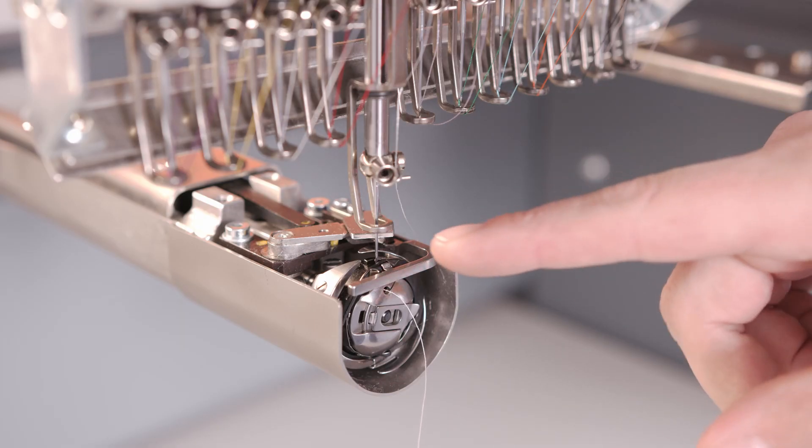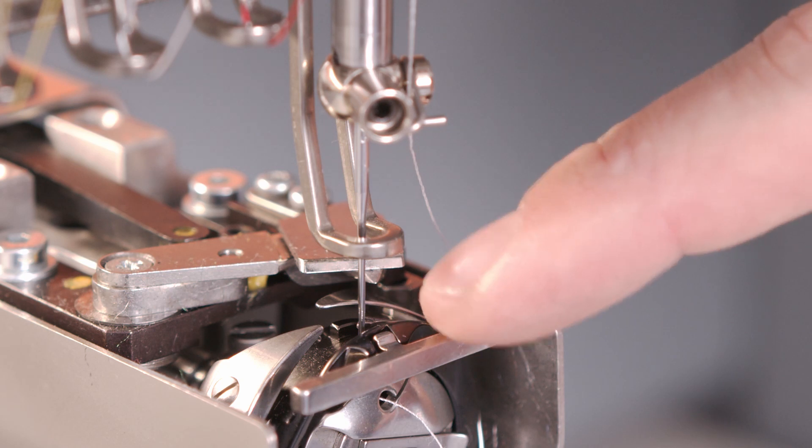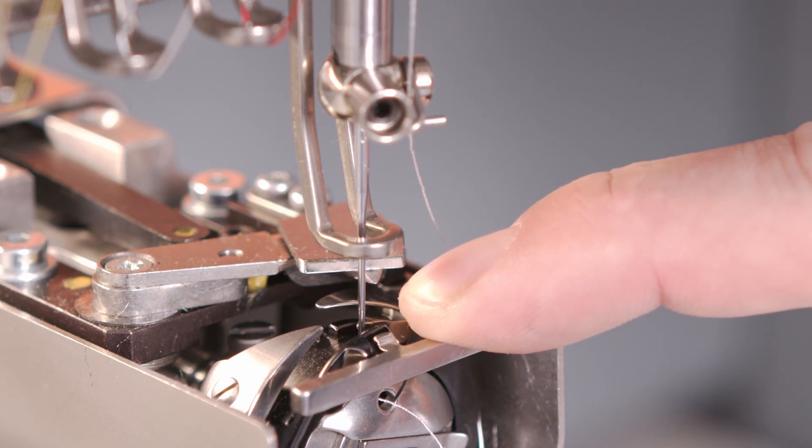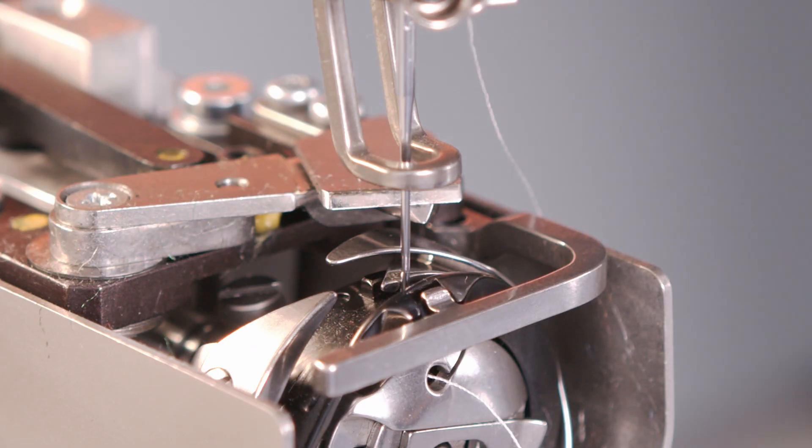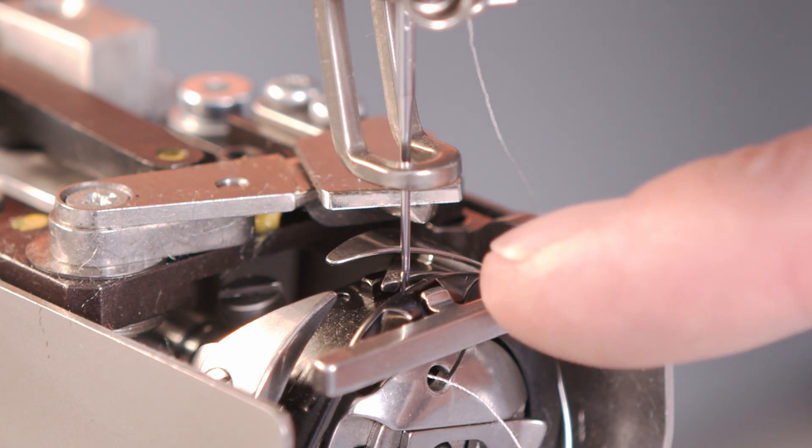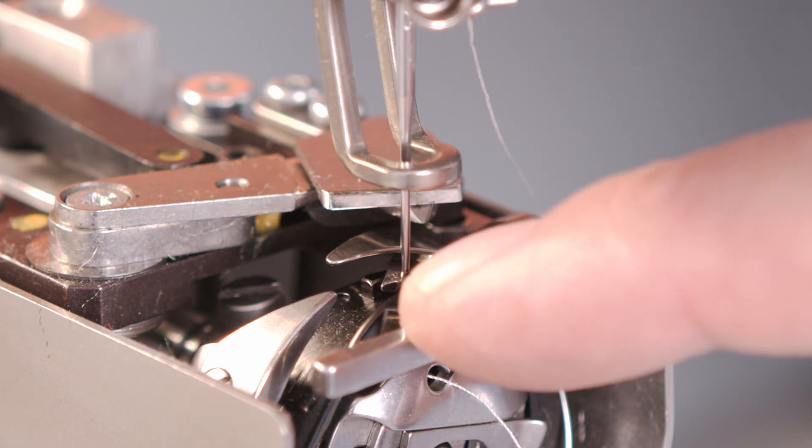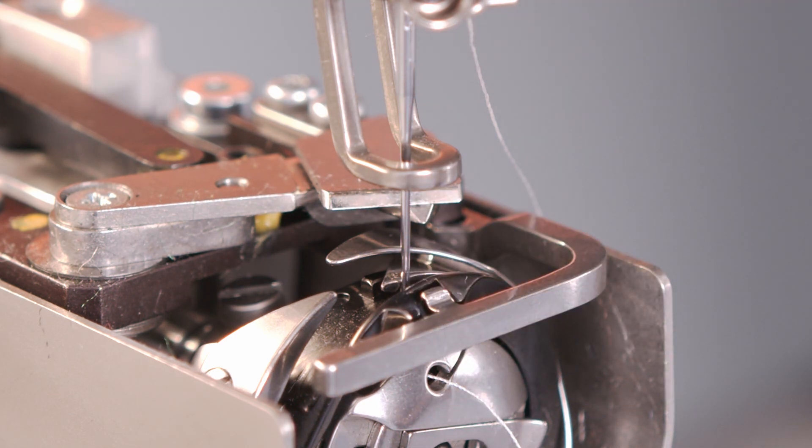Here we can see now that the needle is perfect in front of the hook tip. Then upper and bottom shaft are synchronized again. Here you can see that it is not correct. The needle is not in front of the hook tip. The hook tip is coming too early and it's already past the needle. If you have this problem please contact your local agency.